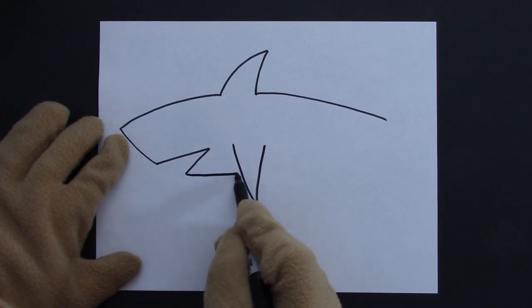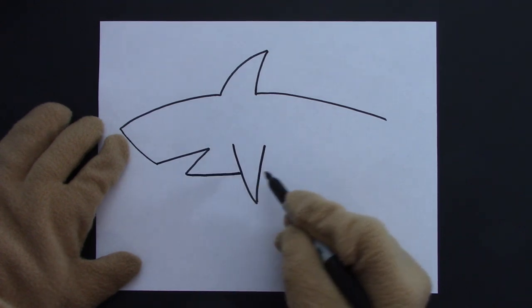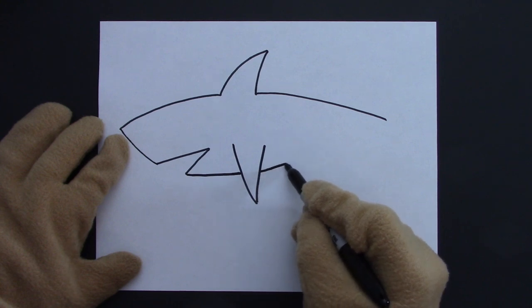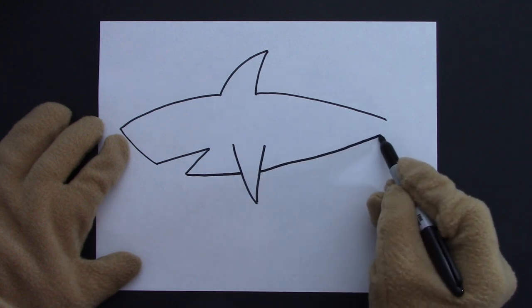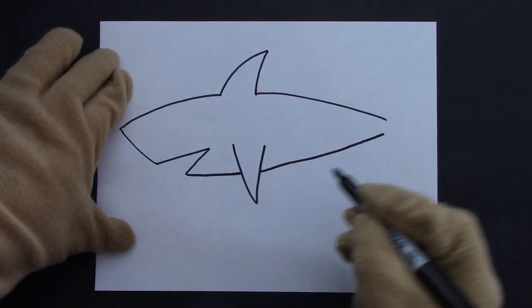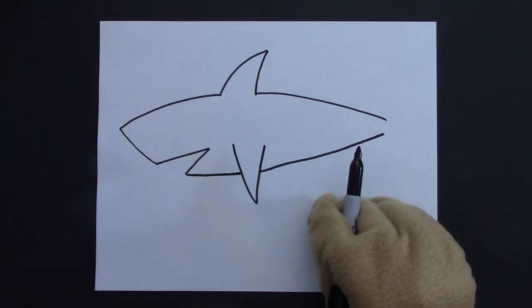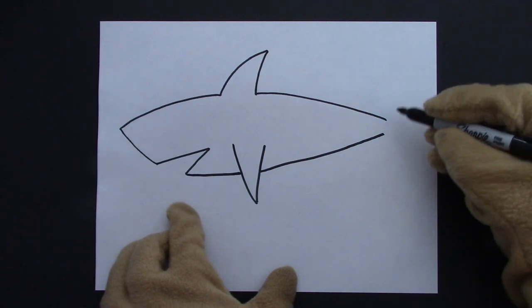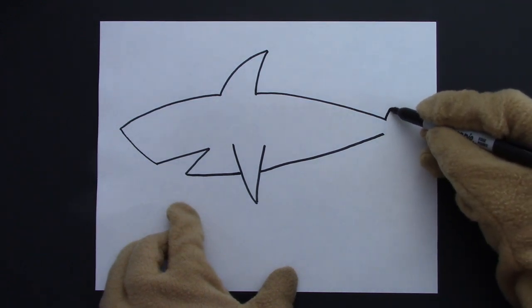Imagine it goes behind and continues on from there to where the tail will begin. And don't worry if your lines don't look perfect, they still look good. All right, now the tail will curve up and back.